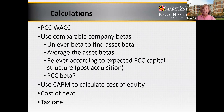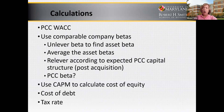The first step here is to calculate the cost of equity. You have information on comparable companies. You can take the betas of the comparable companies and unlever them to turn equity betas into asset betas and average them. Here you must make a decision: are you going to use all the comparable companies or some of them?